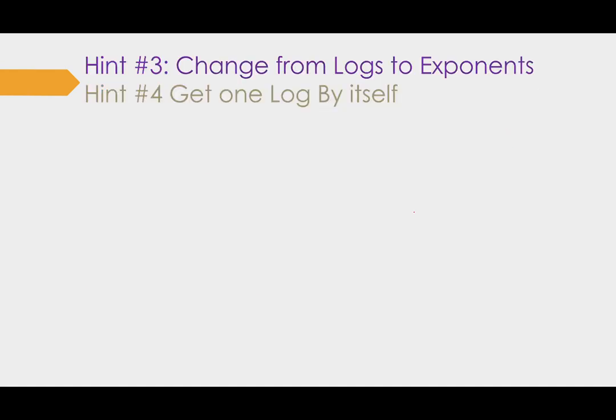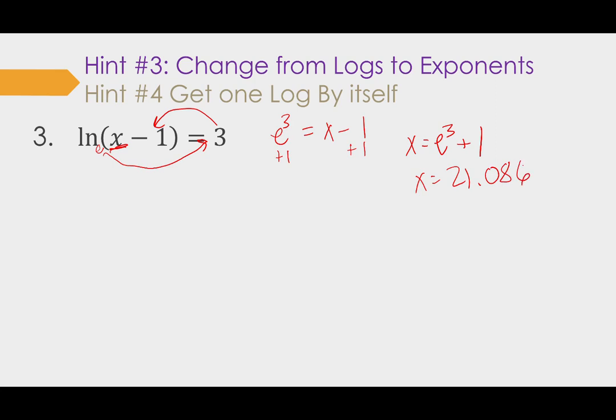Let's look at hints number three and four. Number three says change from logs to exponents. So let's look at number three first. This one is written in logarithm form, but it's got that variable inside and I want the variable to come out. So I'm going to look at my base here. That's e, e to the third power, using my circle, equals my answer, which is x minus one. Variable is out of the logarithm. So I'm going to add one to both sides. x equals e to the third power plus one. That one, when you get it in the calculator, is 21.086 rounded.